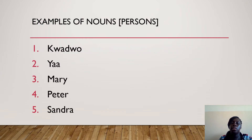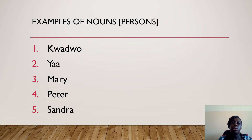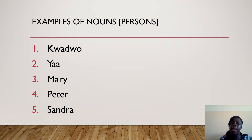We move to the examples of noun as in persons. We have Kwecho, Ja, Mary, Peter, Sandra. As you are a person, you are a noun because you have a name. As we started earlier on, a noun is a naming word. So if you have a name as in person, you are a noun.